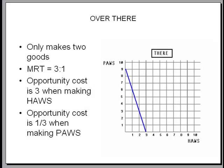Over there they can make two goods, haws and paws, but the marginal rate of transformation is different.